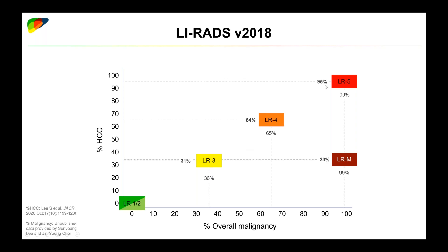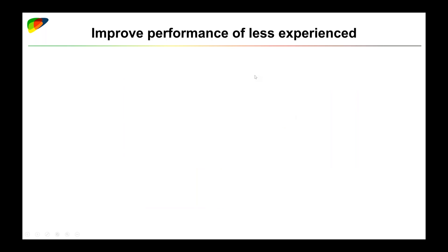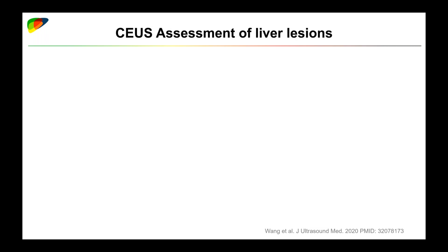This meta-analysis is based on over 1,000 lesions validating each category and providing percentages and proportions of HCC and malignancy observed per each LIRADS category. Notice that as we go from LR1 to LR5, there's a linear progression of the probability of malignancy and HCC, and virtually all malignant lesions within these categories are HCC. In LRM, almost all observations are malignant, and about a third are HCCs.